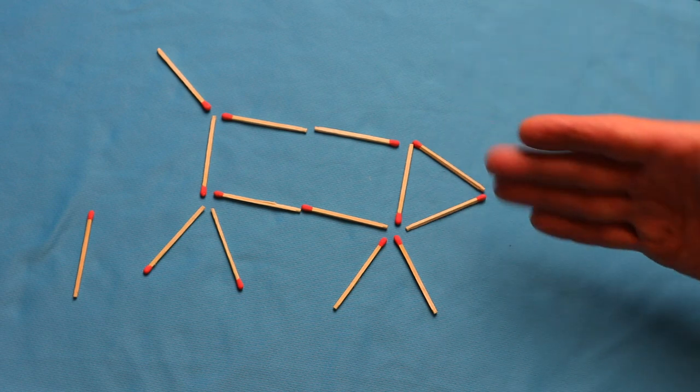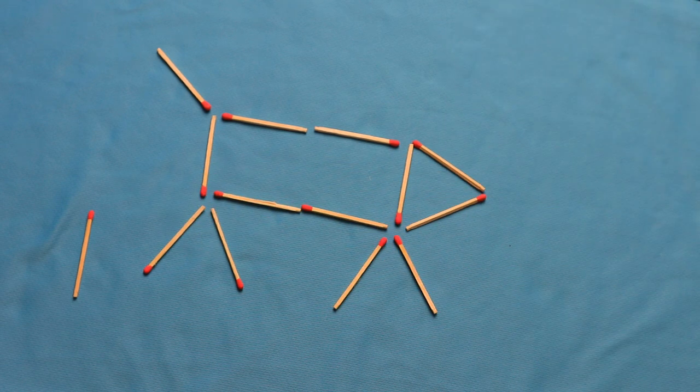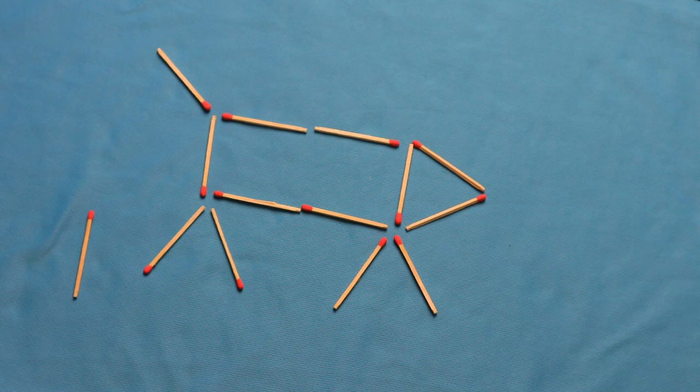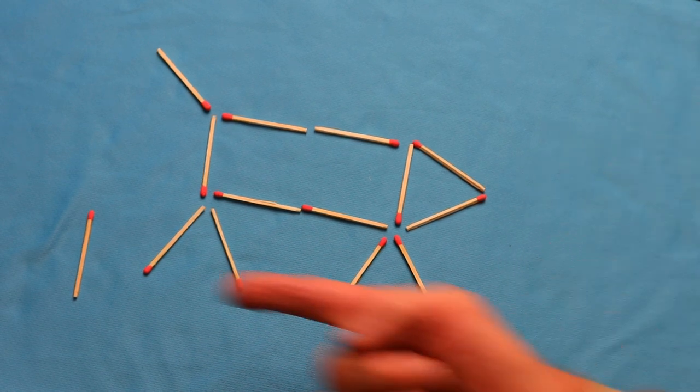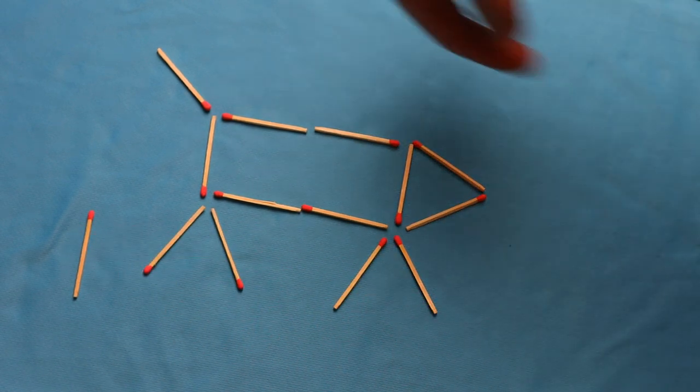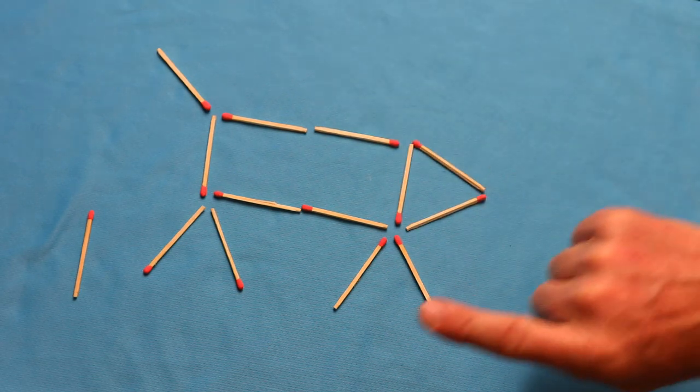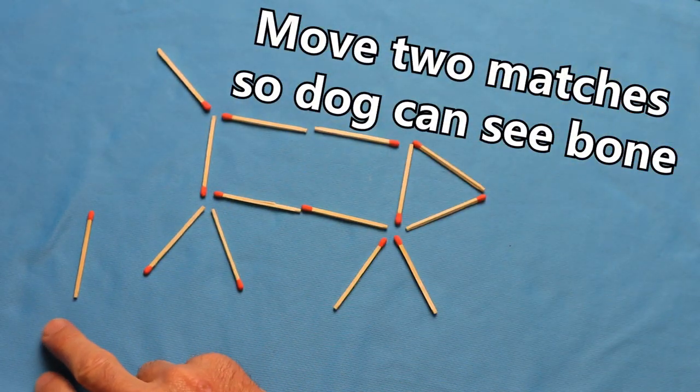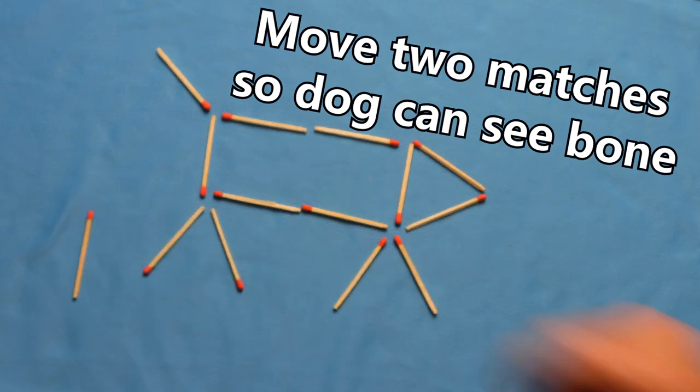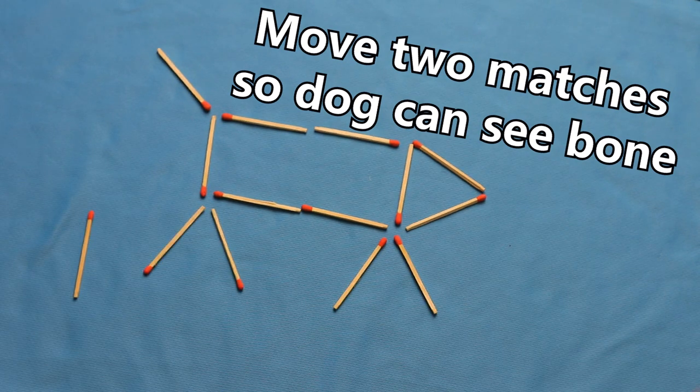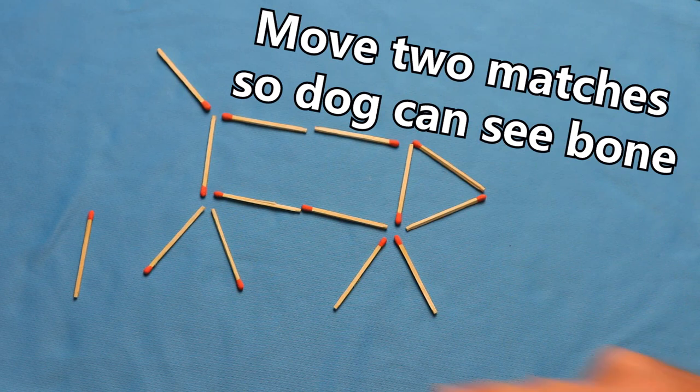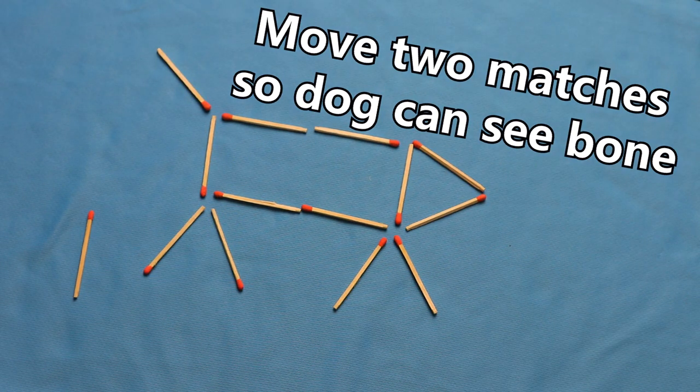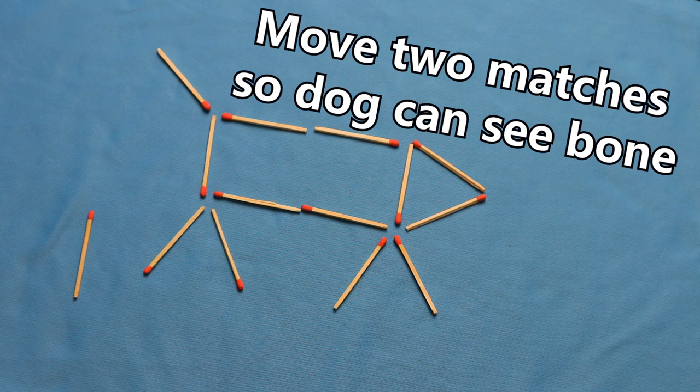And it's your job to help the dog see the bone. So, here's the puzzle. Level one. Move two matches so that the dog can see the bone. Right now, the dog is looking this way. You want the dog to look that way by moving any of these two matches. You can't touch the bone. The bone stays where it is. But, you can move any of these two, and the dog will be facing or looking at the bone. Getting ready to eat. Alright, I think you can figure it out.